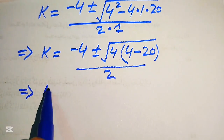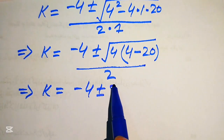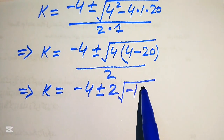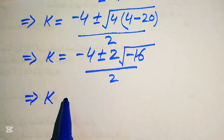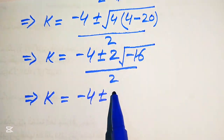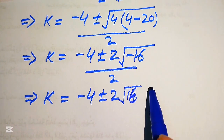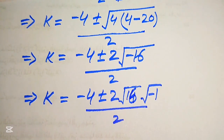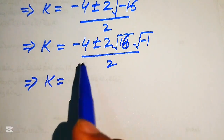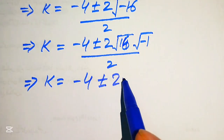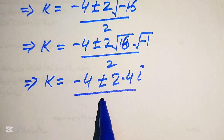Simplifying further: k = (-4 ± √(-64)) / 2. We separate the radical: √(-64) = √64 · √(-1) = 8i, so we get k = (-4 ± 2·√16·√(-1)) / 2 = (-4 ± 2·4·i) / 2, where √(-1) = i (iota).